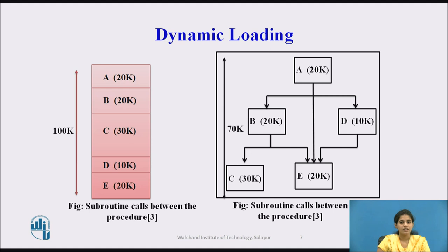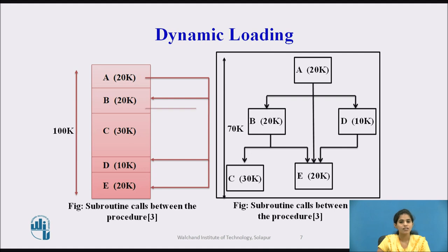The first figure shows the subroutine calls between procedures. It illustrates a program consisting of five subprograms A, B, C, D, and E that requires 100 KB of core. The arrow indicates that subprogram A only calls B, D, and E. Subprogram B only calls C and E. Subprogram D only calls E. Subprograms C and E do not call any other subroutines.